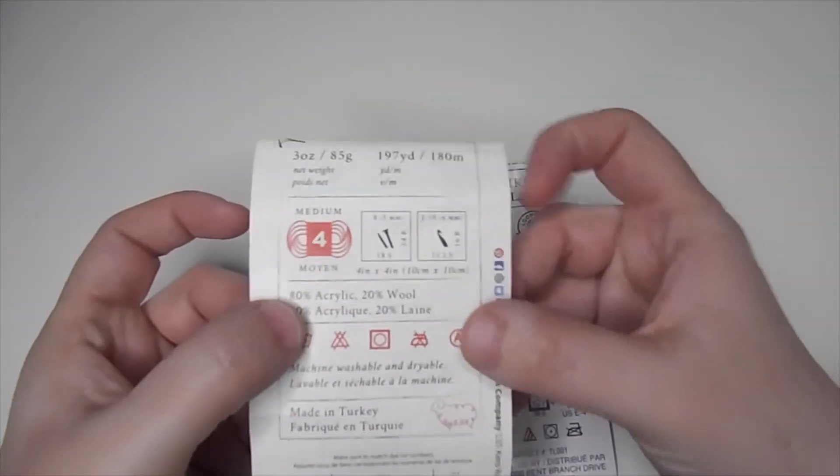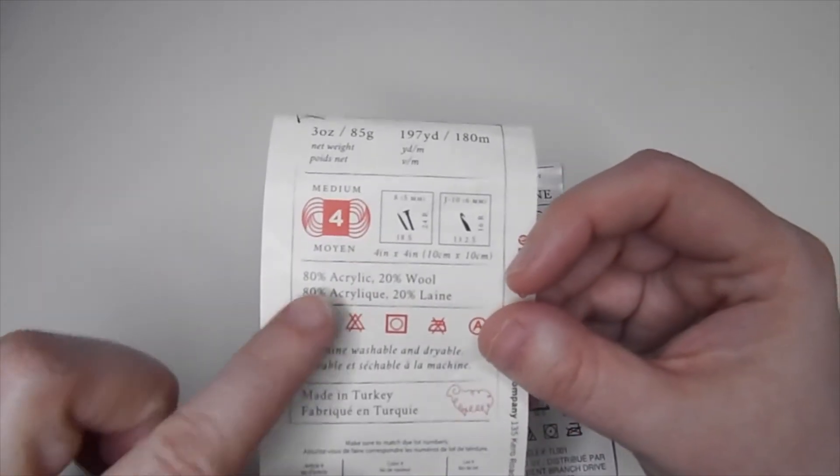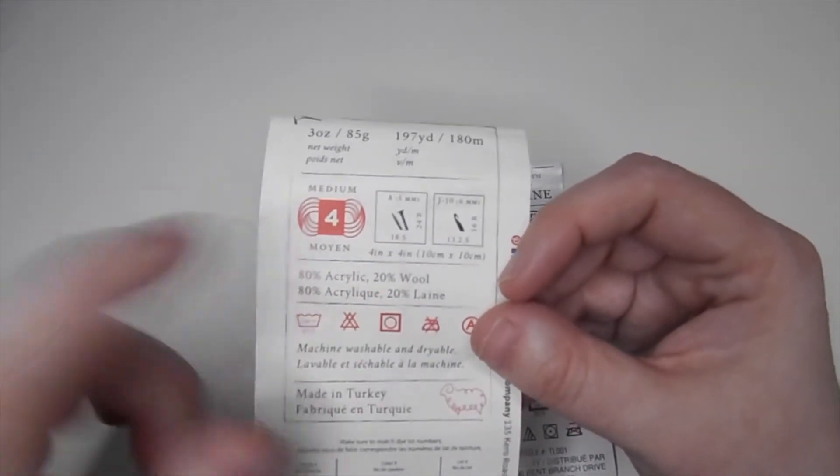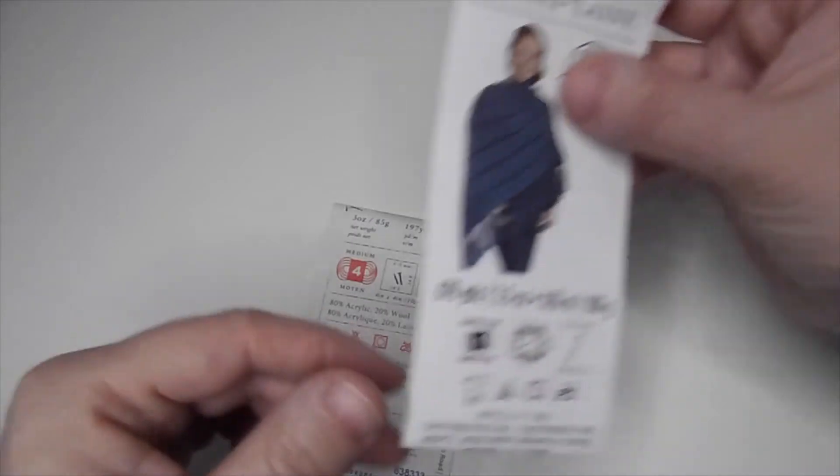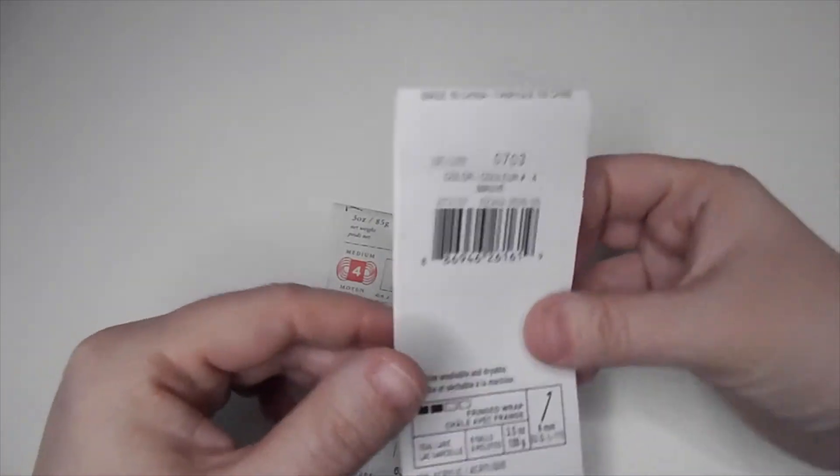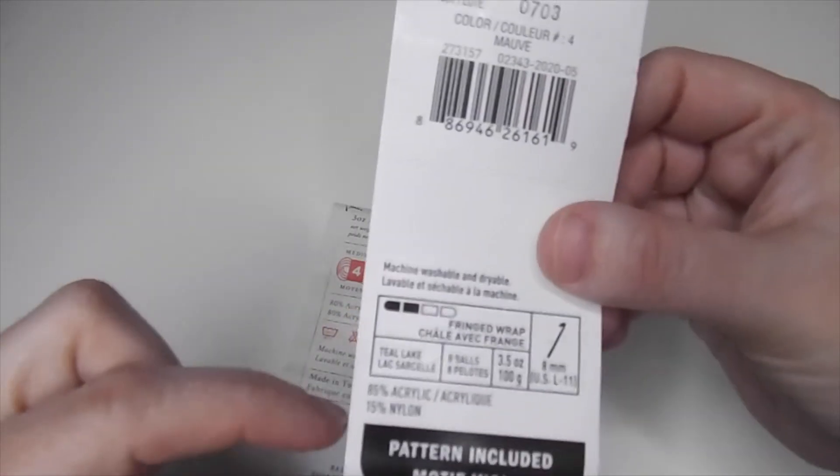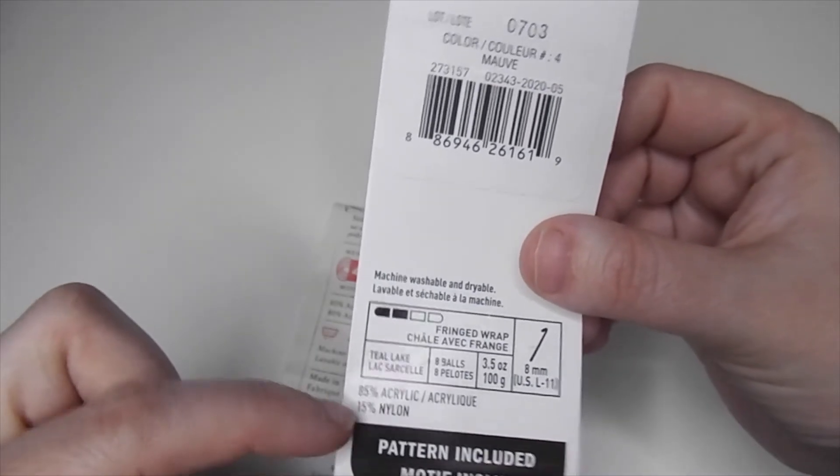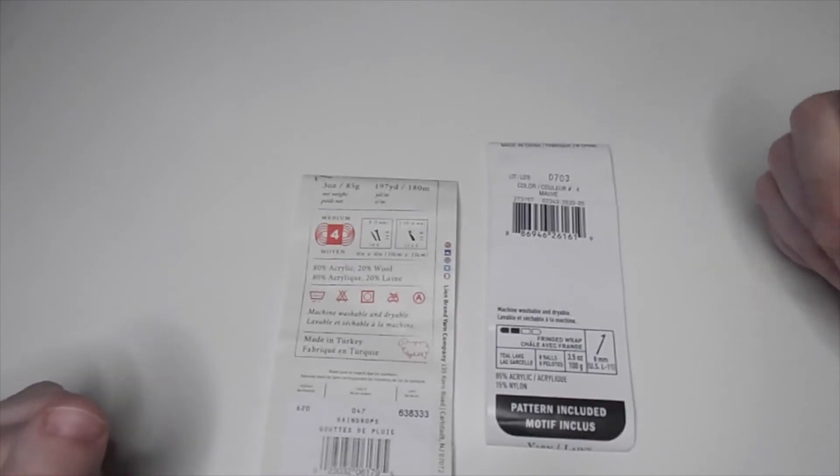Then you have the fiber content. This yarn is 80% acrylic and 20% wool. And if we go here, it's written here, it's 85% acrylic and 15% nylon.